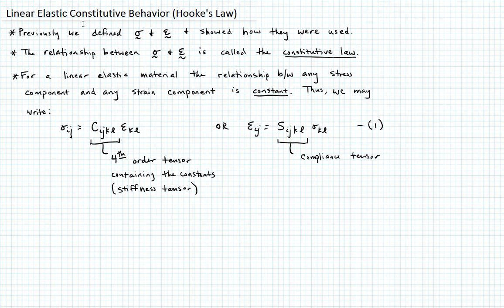The fourth order tensors C and S each contain 81 terms. That's just 3 to the fourth power. There's four dimensions, each one goes through 1, 2, 3, that gives us 81.